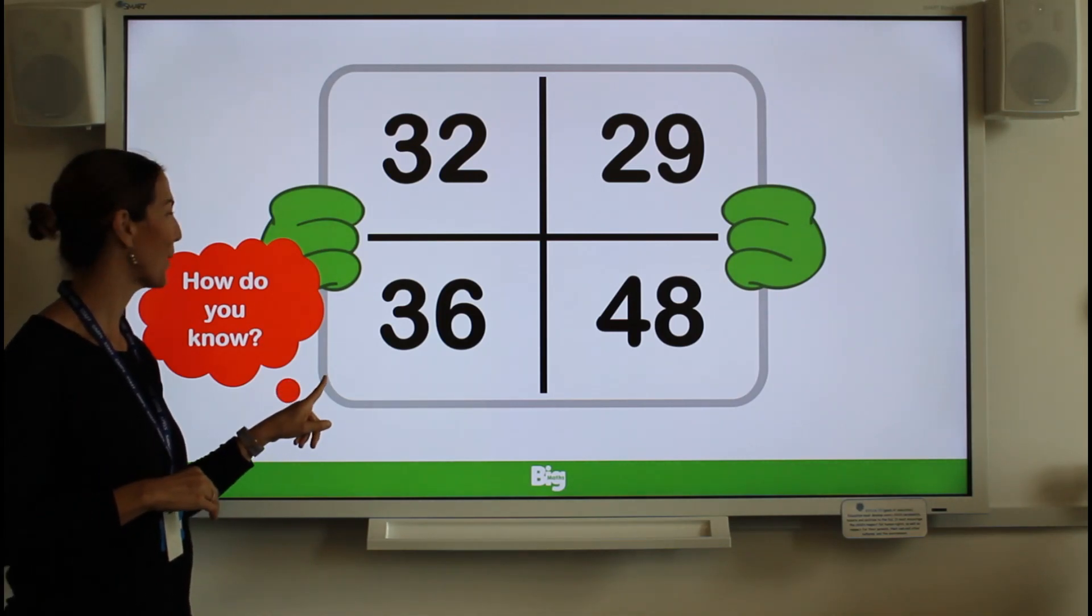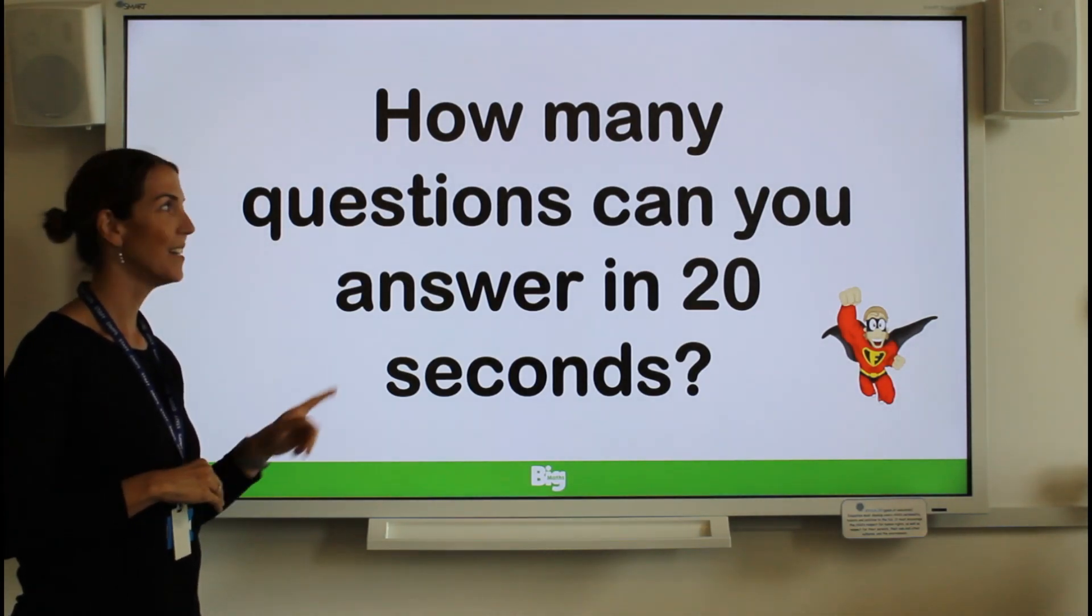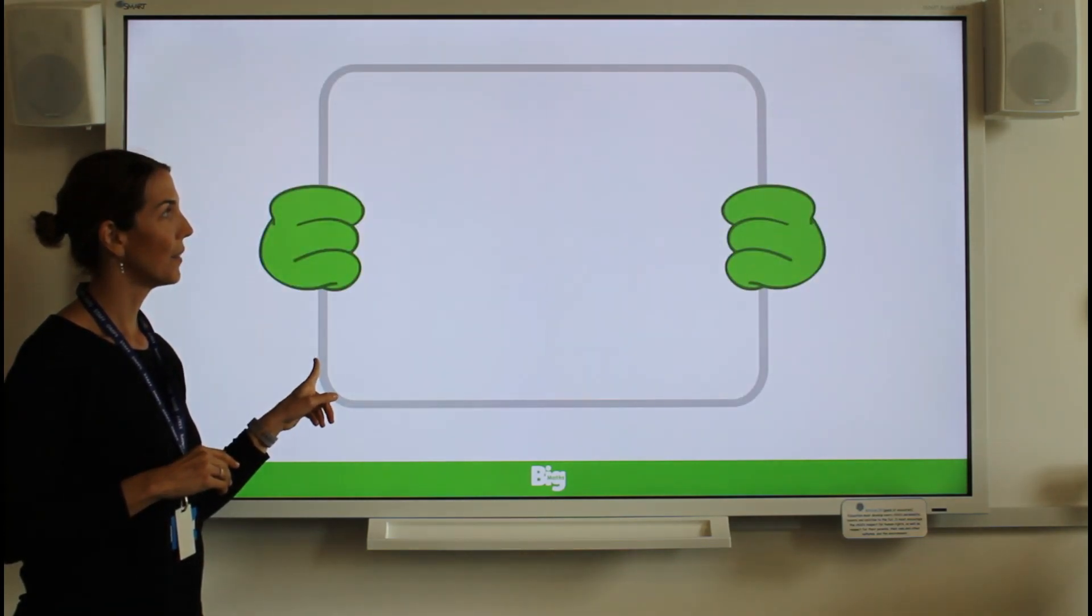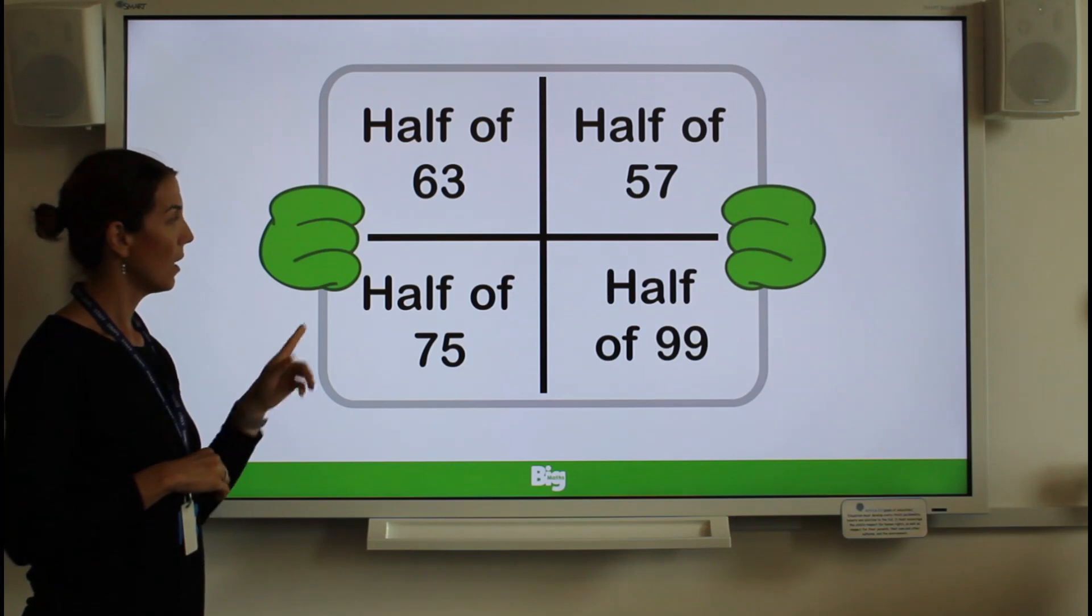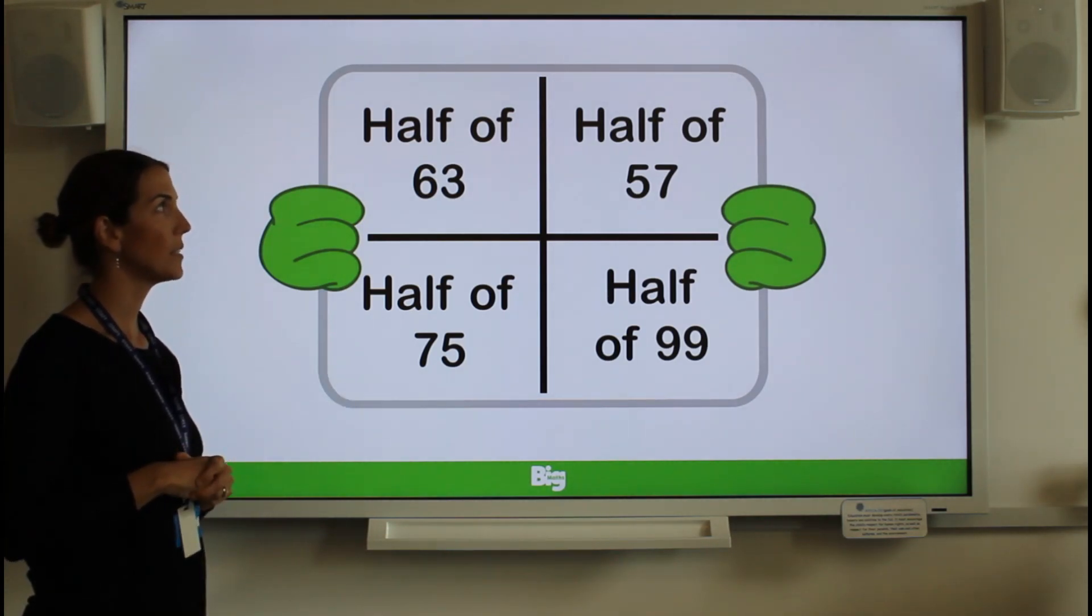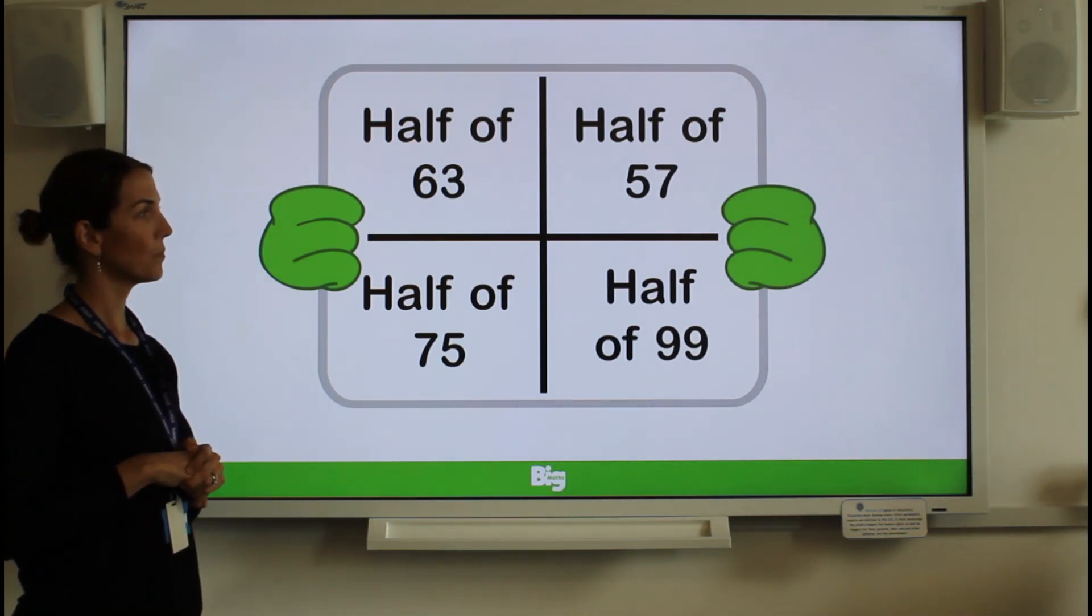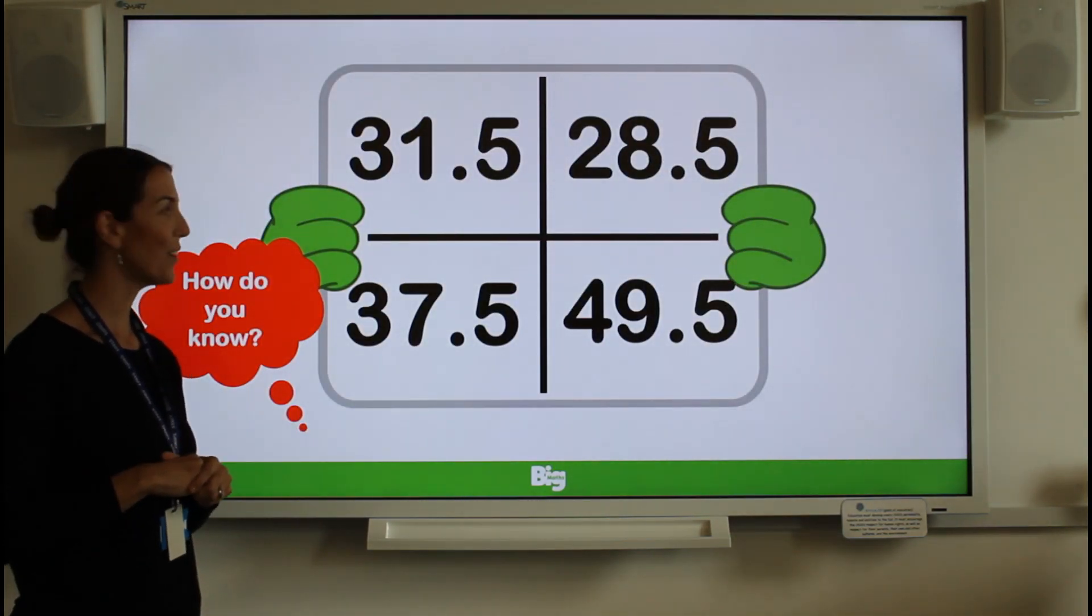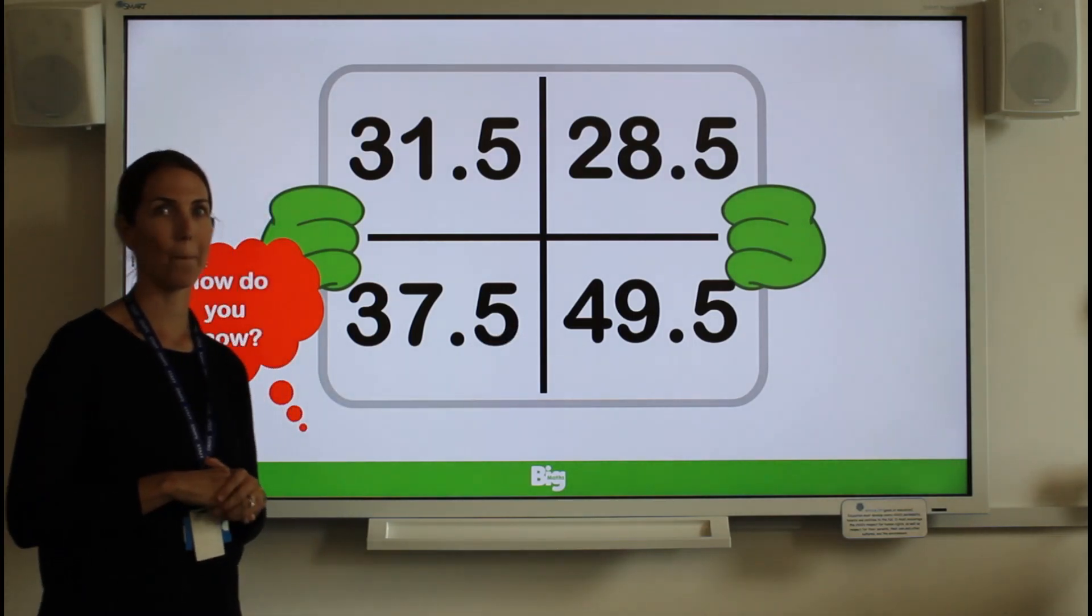One more. Let's go. Maybe you can be even quicker this time. Last time you might have had 20 seconds. This time, let's see if you can beat the time. Time starts. Half of 63. Half of 75. Half of 99. Half of 57. Pause the video. Let's find out what the answers are. 31.5, 37.5, 49.5, 28.5.